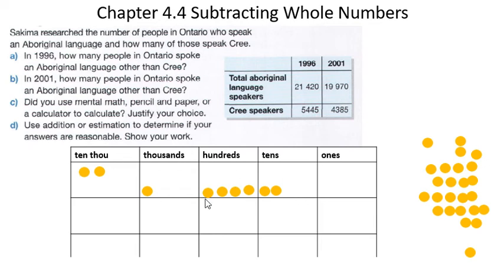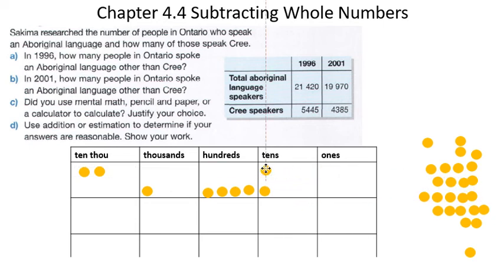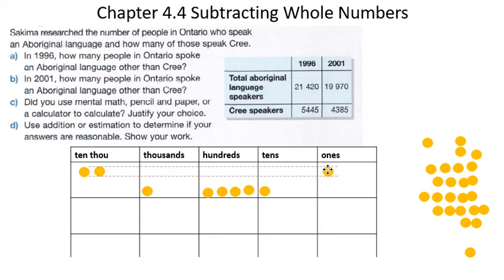21,420. We're now going to subtract 5,445 using place value. This says take five ones away in my ones column, but I don't have five ones, so I have to take away one of the tens and move it over here. So I'm regrouping one of the tens — instead of having one ten here, I'm going to move it over here and this will become ten ones.